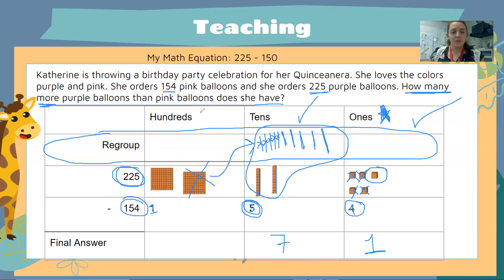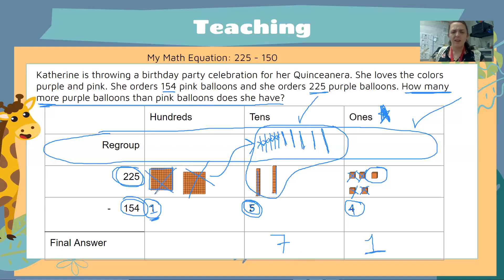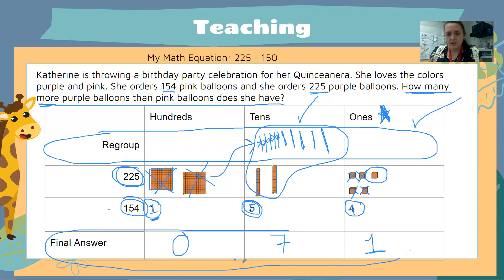My final step is to look at my 100s. I see one flat left, and I need to cross out one of the 100s. Now I don't have any hundreds left, so I just write a zero at the bottom of my chart. And this is my final answer: 71. Do you see how my chart helped keep me organized, especially when regrouping?